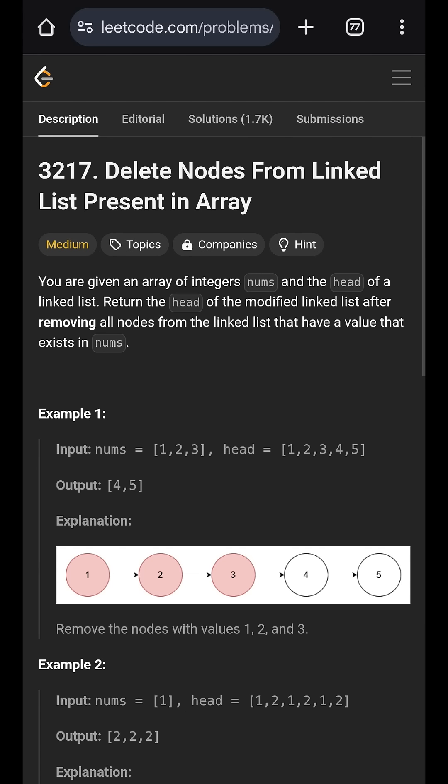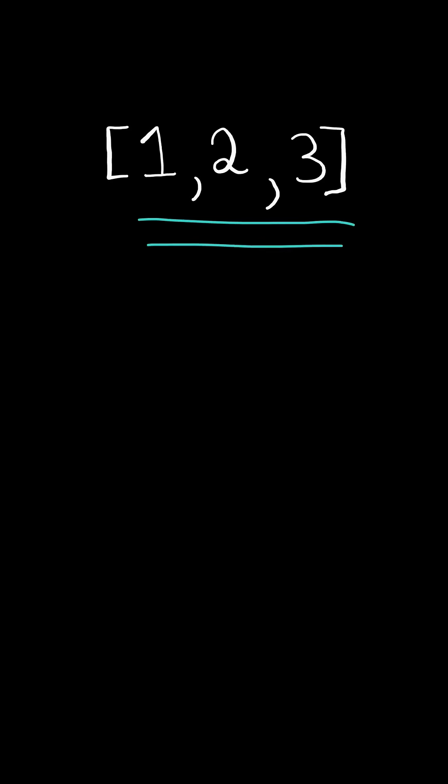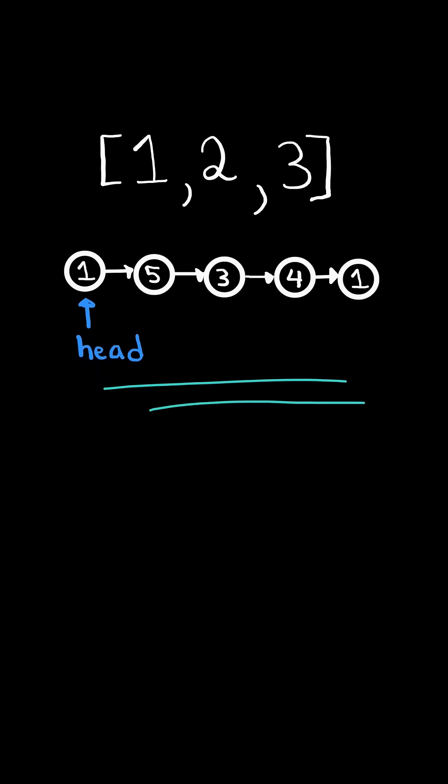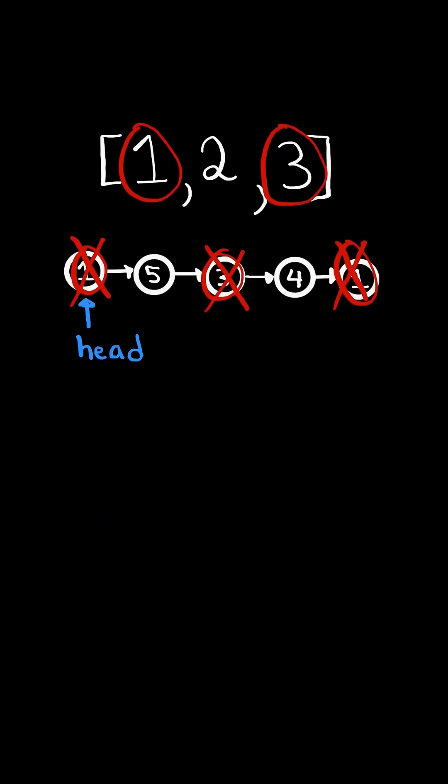Delete nodes from linked list present in array. Given a list of numbers and the head of a linked list, consider the node values that appear in the list of numbers and delete them from the linked list and return the new head.